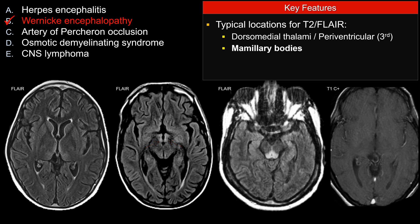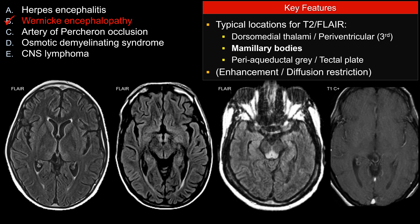The differential diagnosis is quite short. Another location is around the tectal plate or by the periaqueductal gray. Often there's enhancement and restricted diffusion associated with this area. In this particular case, we don't really see that much enhancement — there's just a thin enhancement around the lateral edge of the thalamus.